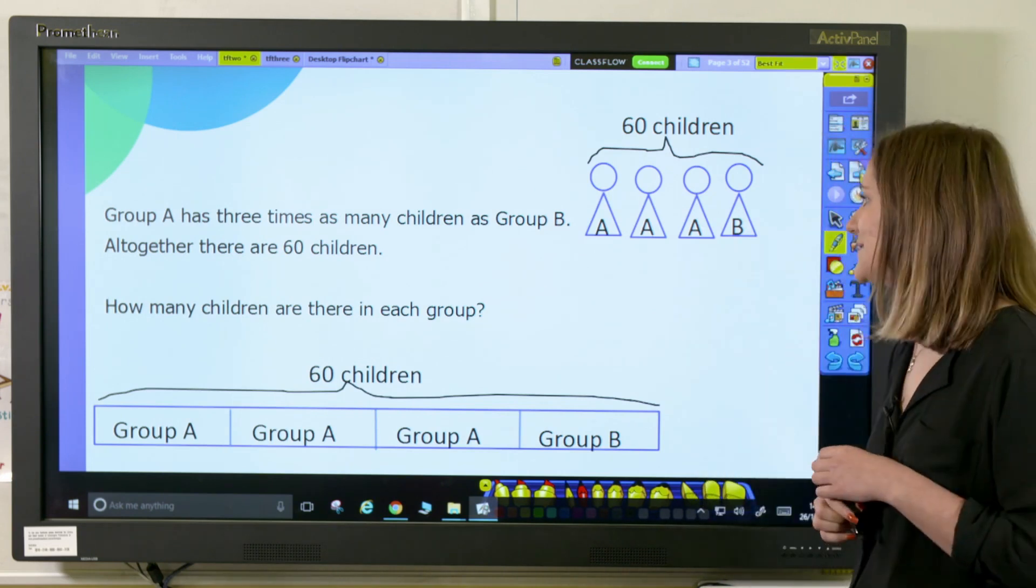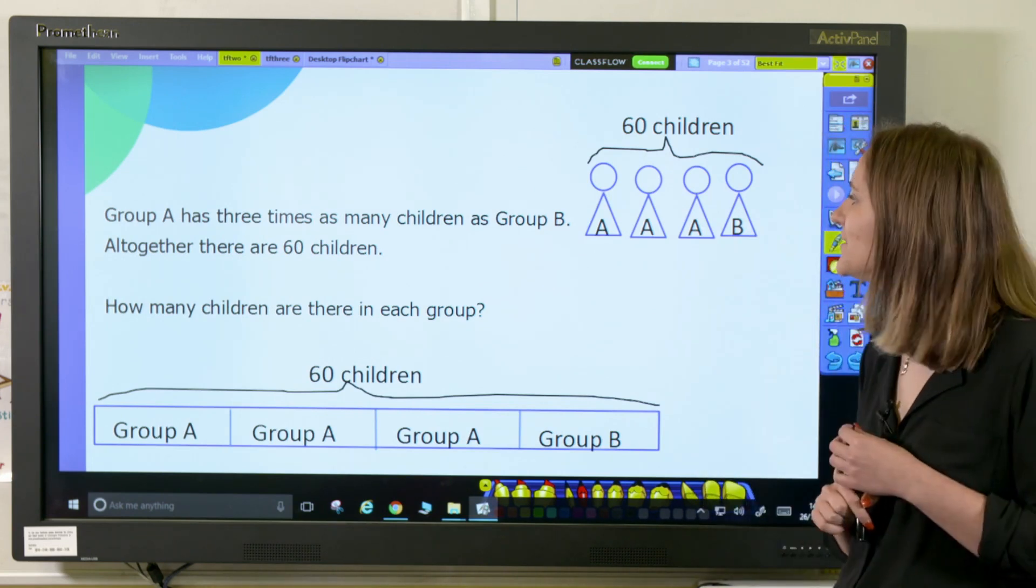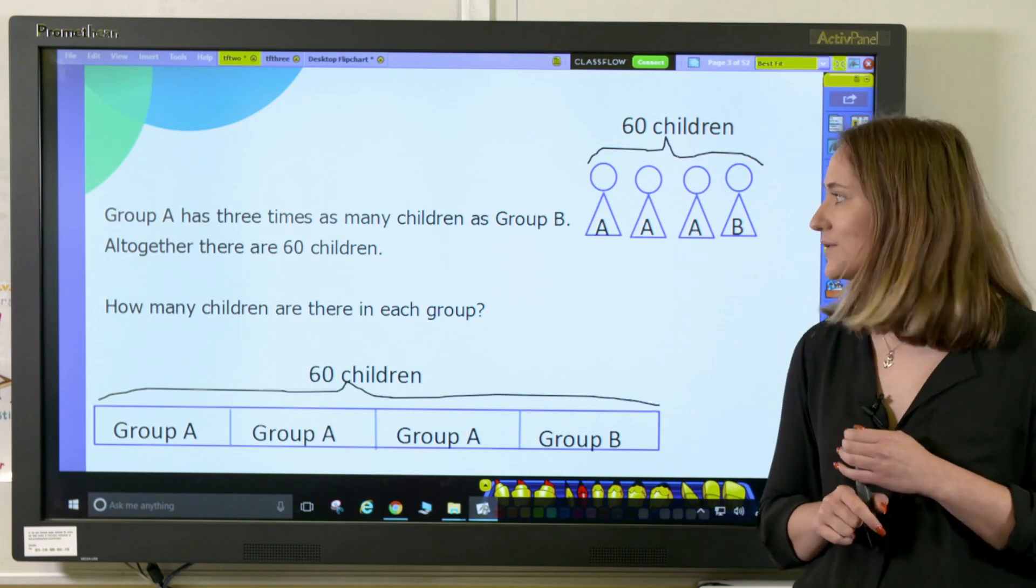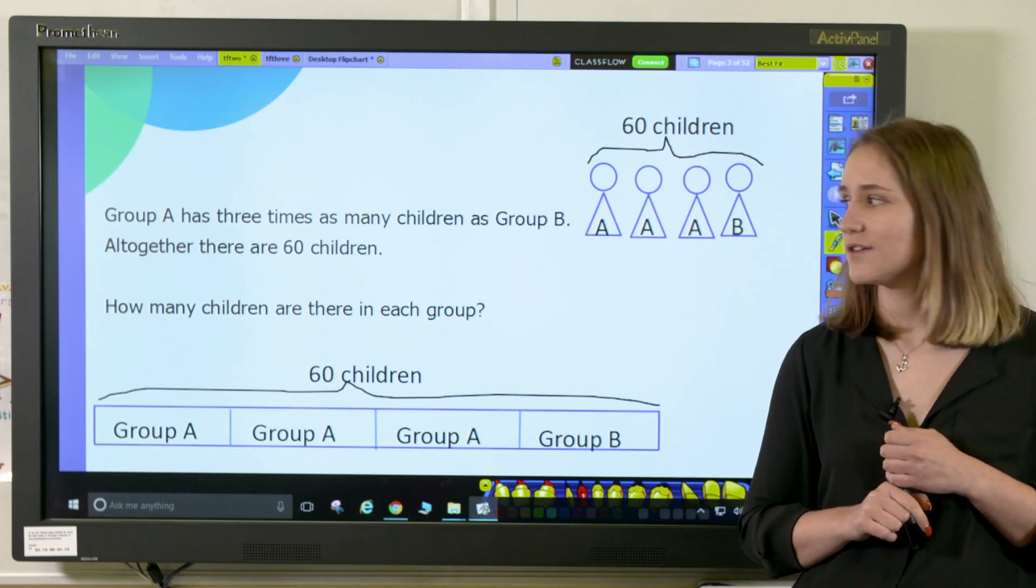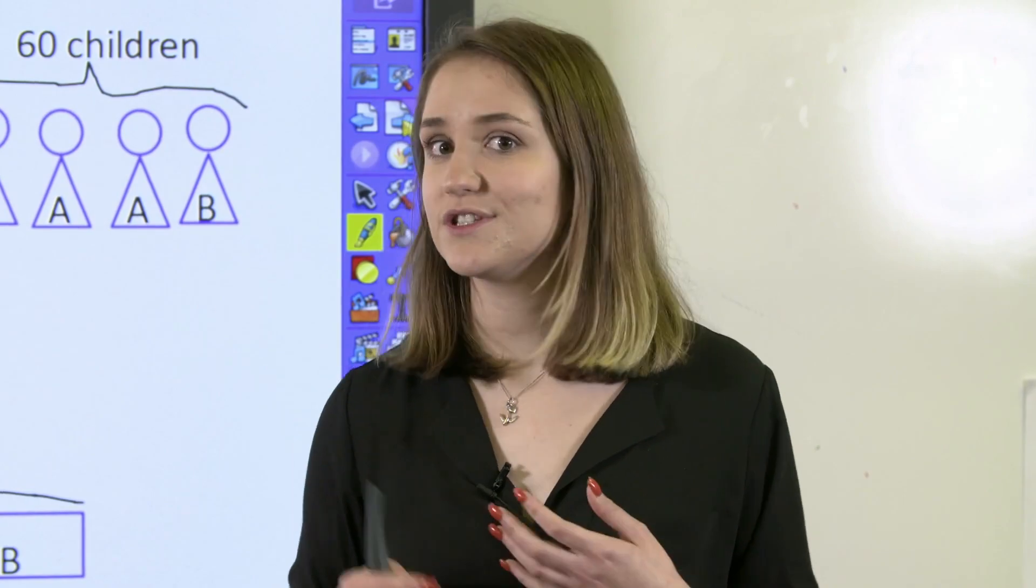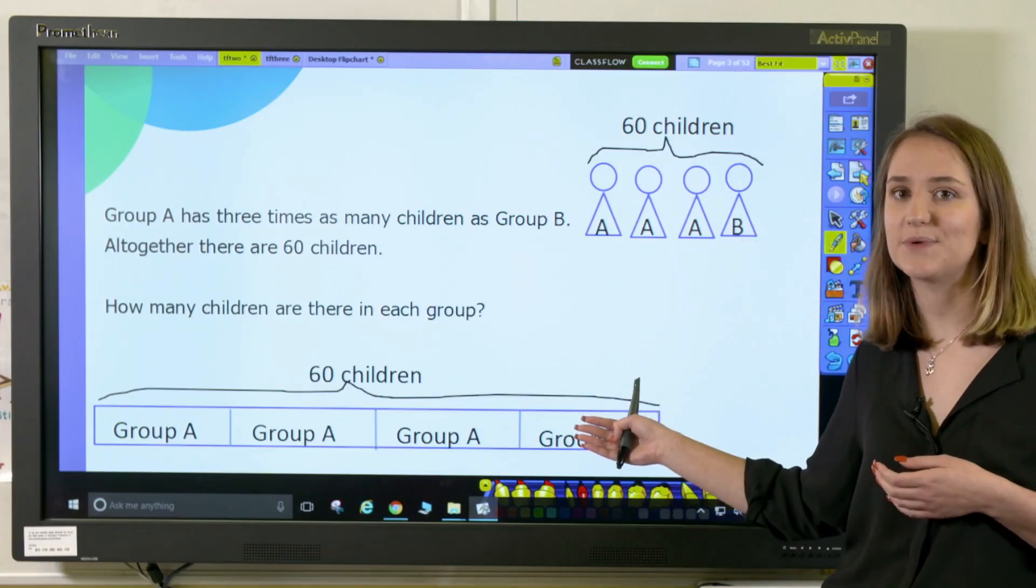This final problem says that group A has three times as many children as group B. Altogether there are 60 children. How many children are in each group? Your pupils may wish to represent this using physical objects, or they may wish to choose to represent this pictorially like one of these two examples.